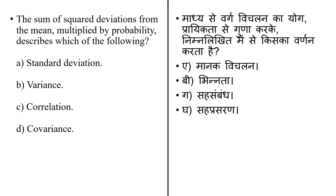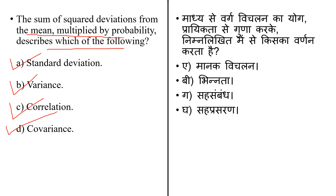Here is the last question for today's lecture: the sum of squared deviations from the mean multiplied by probability describes which of the following? Options: (A) standard deviation, (B) variance, (C) correlation, (D) covariance. Please answer this question — write your answer in the comment box. I am waiting for your answer. Till then, keep watching, keep learning.